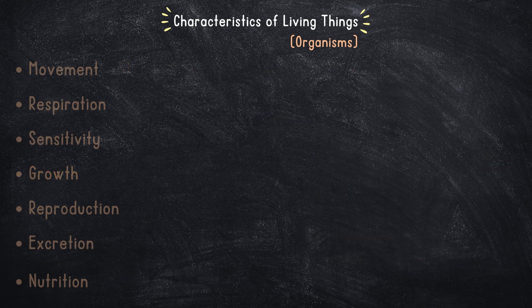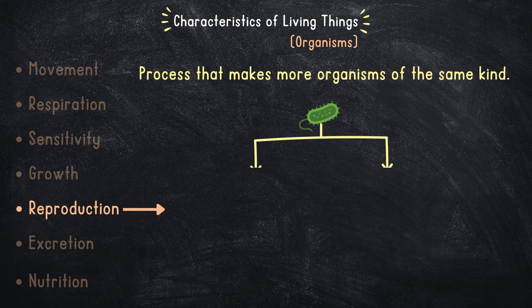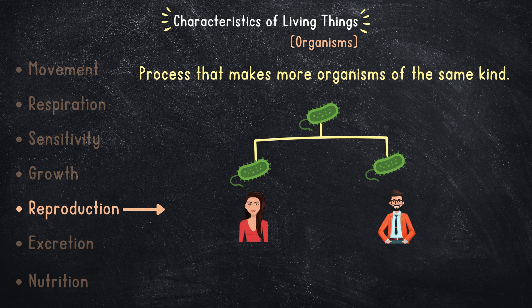Another key trait is reproduction, which is the process that makes more organisms of the same kind. For example, bacteria reproduce by splitting into two identical cells, or two parents can combine their genetic information to create a genetically unique baby.